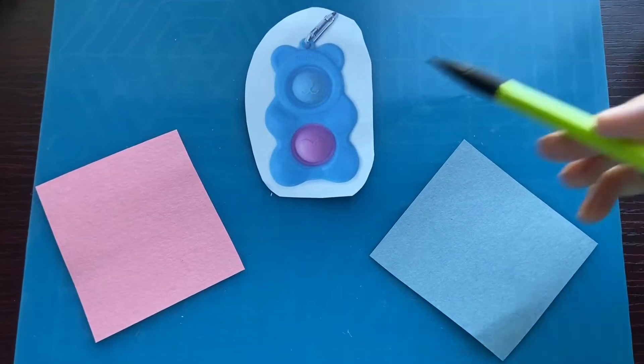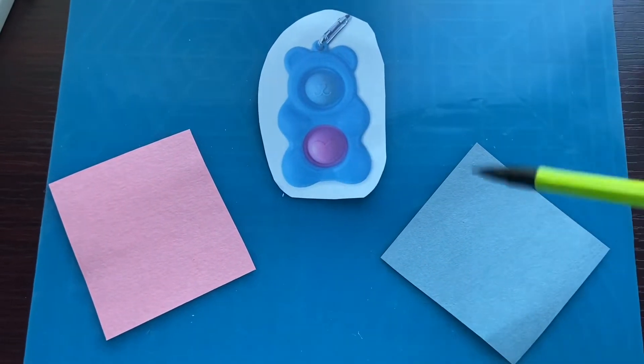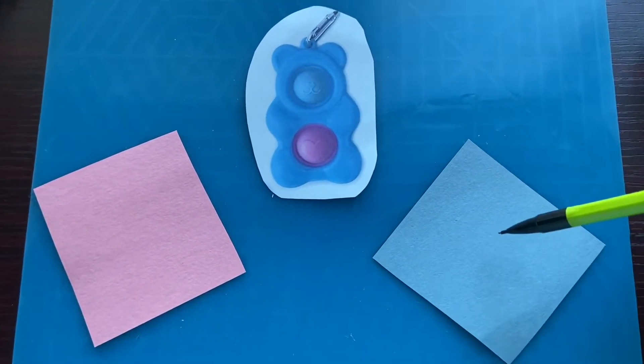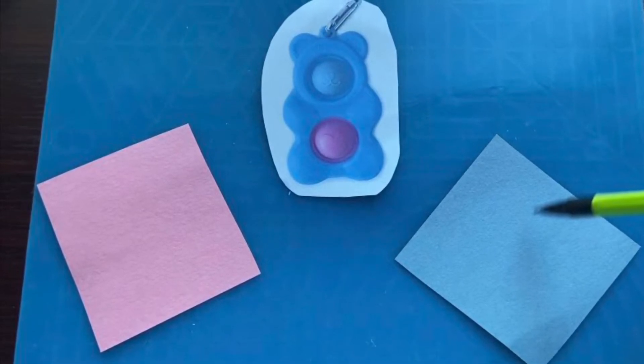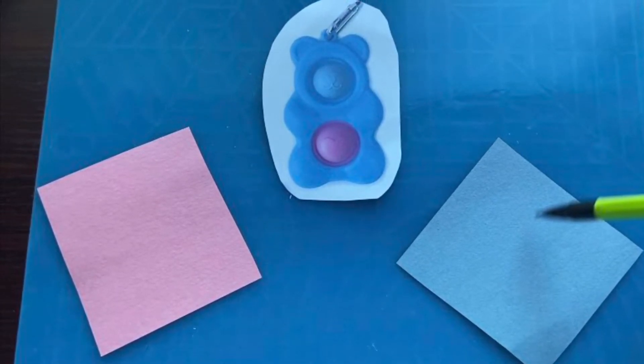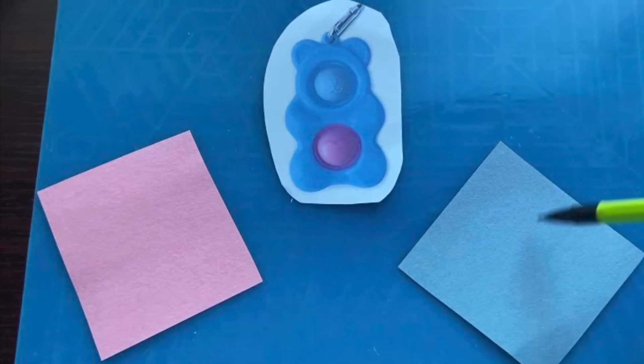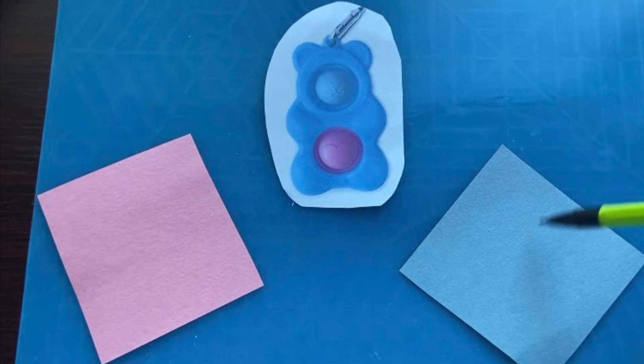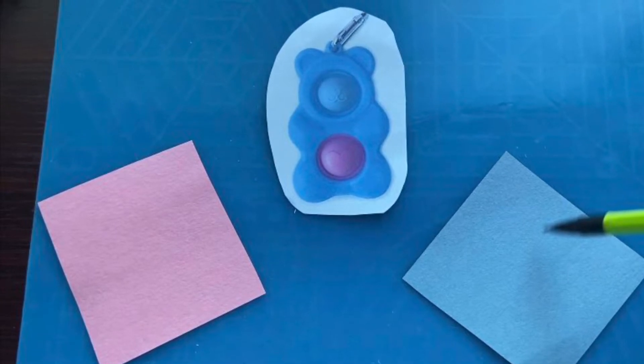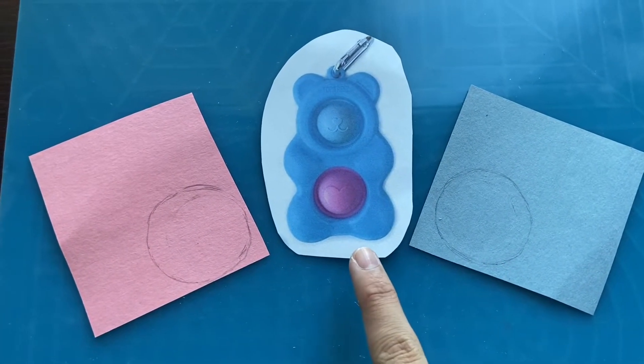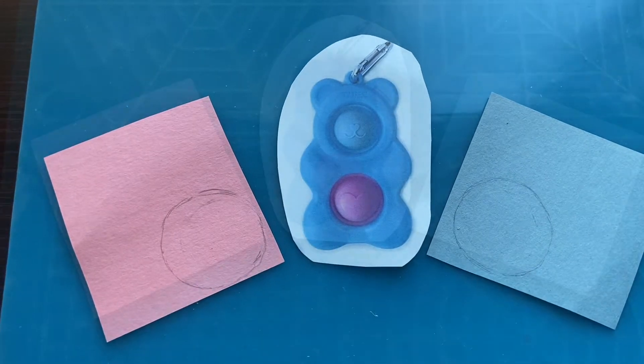So the first thing that you're going to want to do is trace out this circle on each one of these little construction paper pieces. And I forgot to tell you while recording this, you can either draw a face on the paper if you wanted to make it cute, or if you don't have construction paper, you can always take white paper and color it with a marker. And be sure to make your holes a little bigger than you want them, because you'll see why later in the video.